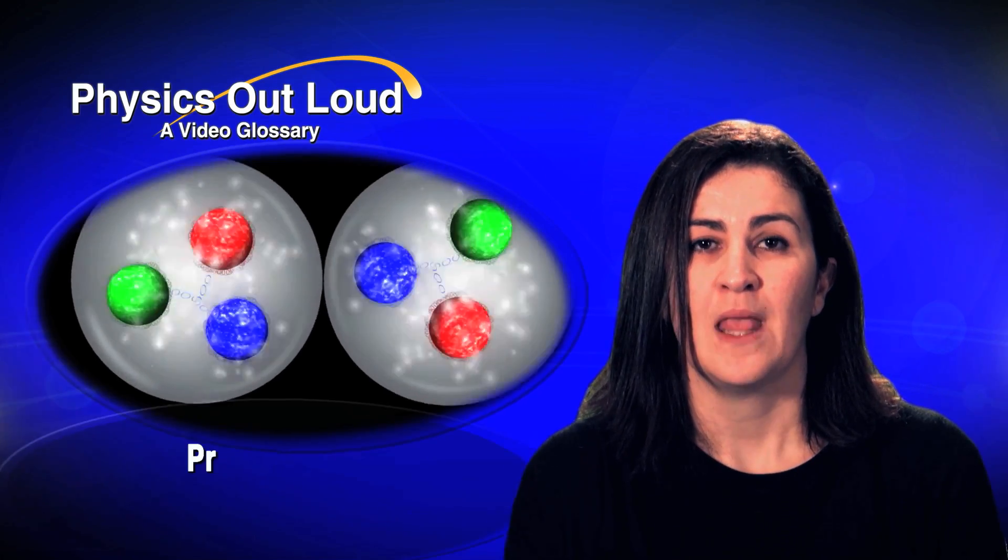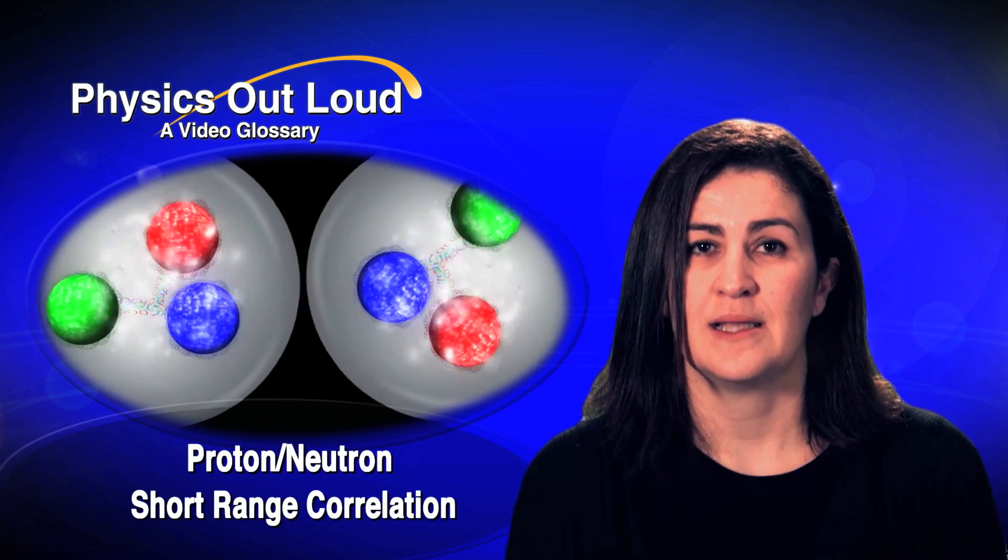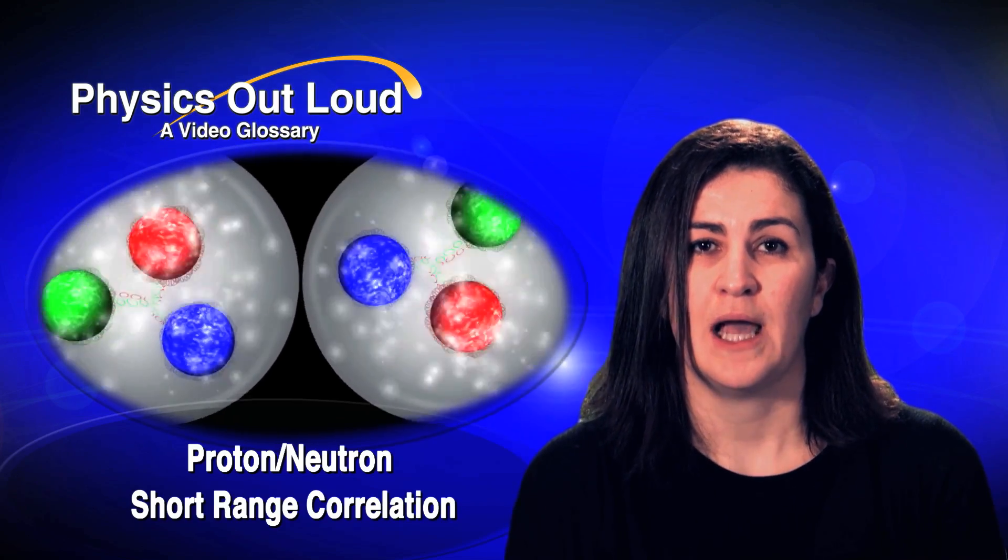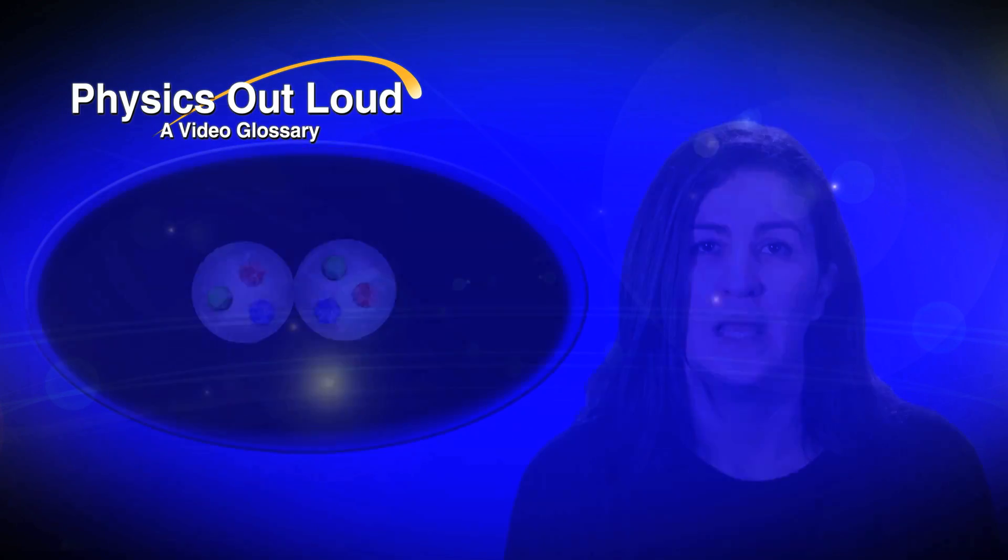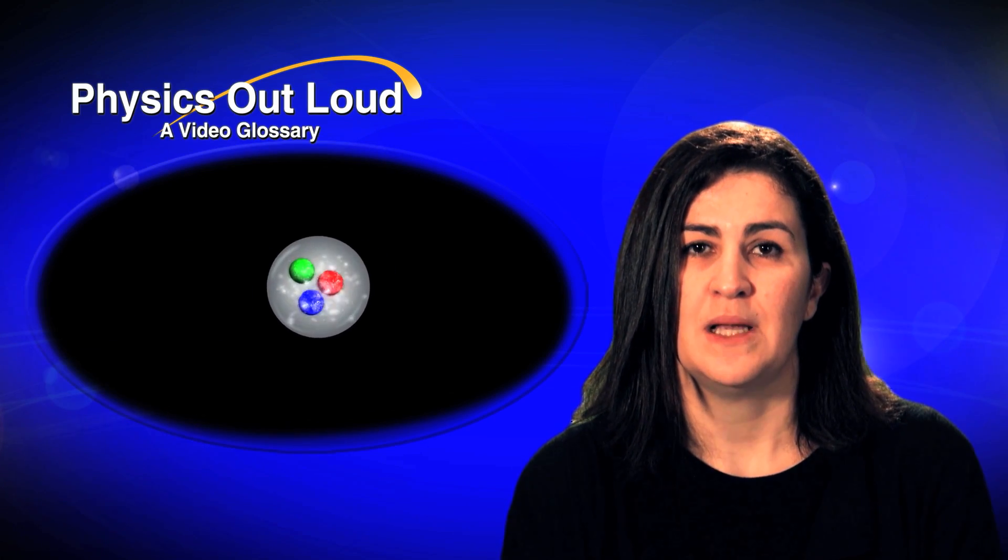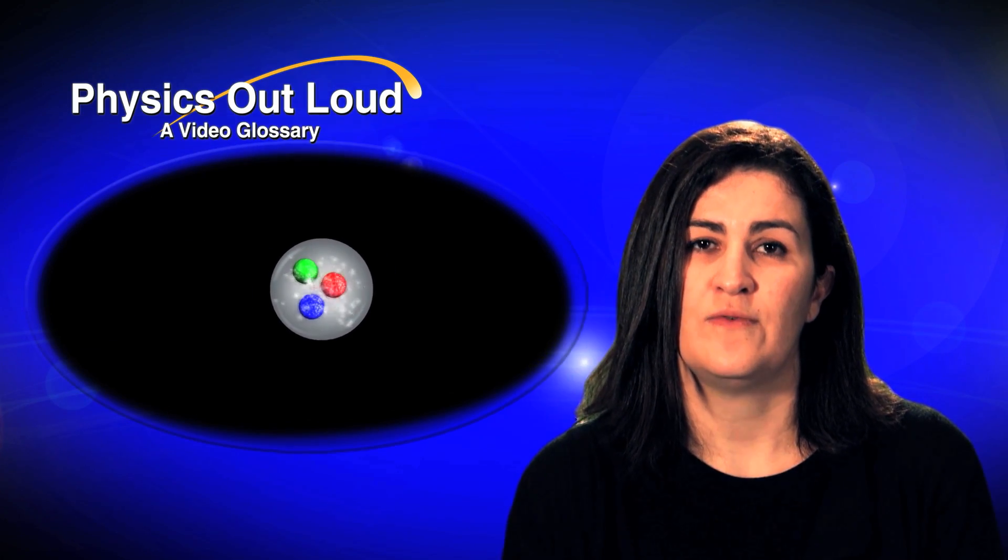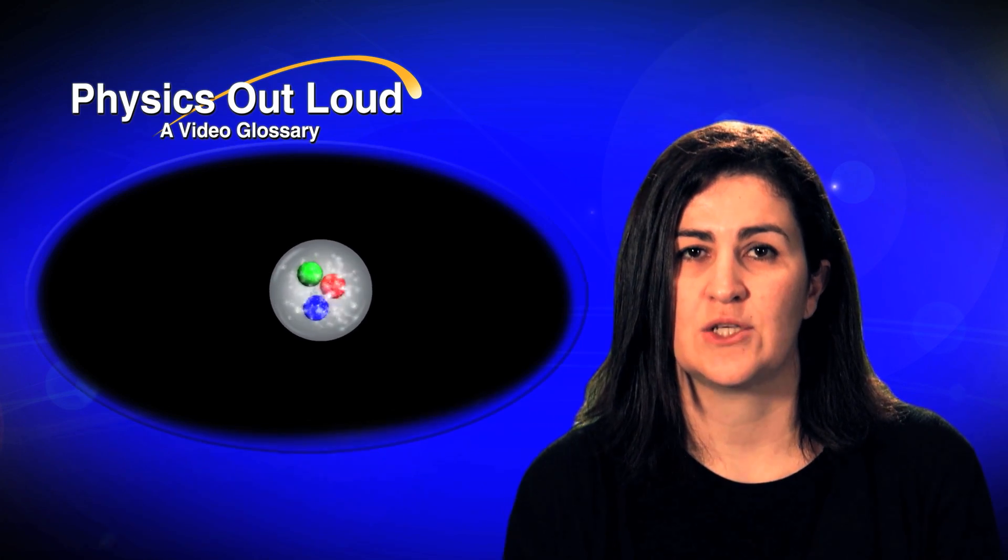So what happens is often protons and neutrons get very close to each other and press against each other. When we push one of them, the other is going to go very fast in the opposite direction.